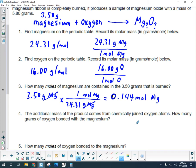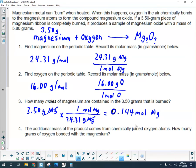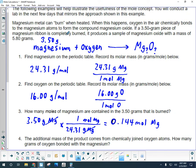Number 4 says the additional mass of the product comes from chemically joined oxygen atoms. How many grams of oxygen bonded with the magnesium? I wasn't given that number straight away, but I was given that the magnesium oxide product, if we were to collect it all and measure its mass, would have a mass of 5.80 grams.